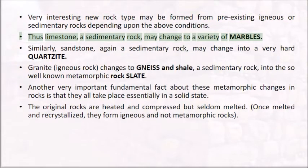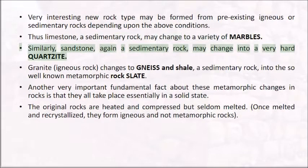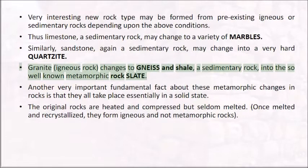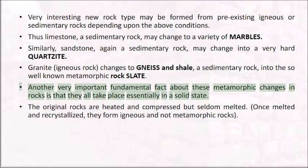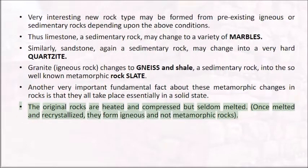Thus limestone, a sedimentary rock, may change to a variety of marbles. Sandstone, again a sedimentary rock, may change into a very hard quartzite. Granite, an igneous rock, changes to gneiss, and shale, a sedimentary rock, changes into the well-known metamorphic rock slate. An important fact about these metamorphic changes is that they all take place essentially in a solid state. The original rocks are heated and compressed but seldom melted; once melted and recrystallized, they form igneous and not metamorphic rocks.